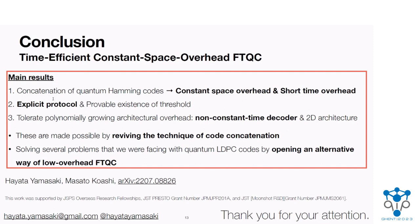Optimization of the sequence of code sizes is left for future work. It will highly depend on your error rate and the target logical error rate, and we need further specification of your architecture. What I have shown is that if we linearly grow the code size, it has quasi-polylogarithmic overhead. If we logarithmically increase the code size, you still have a threshold and can achieve better time overhead, but you may have less error suppression.